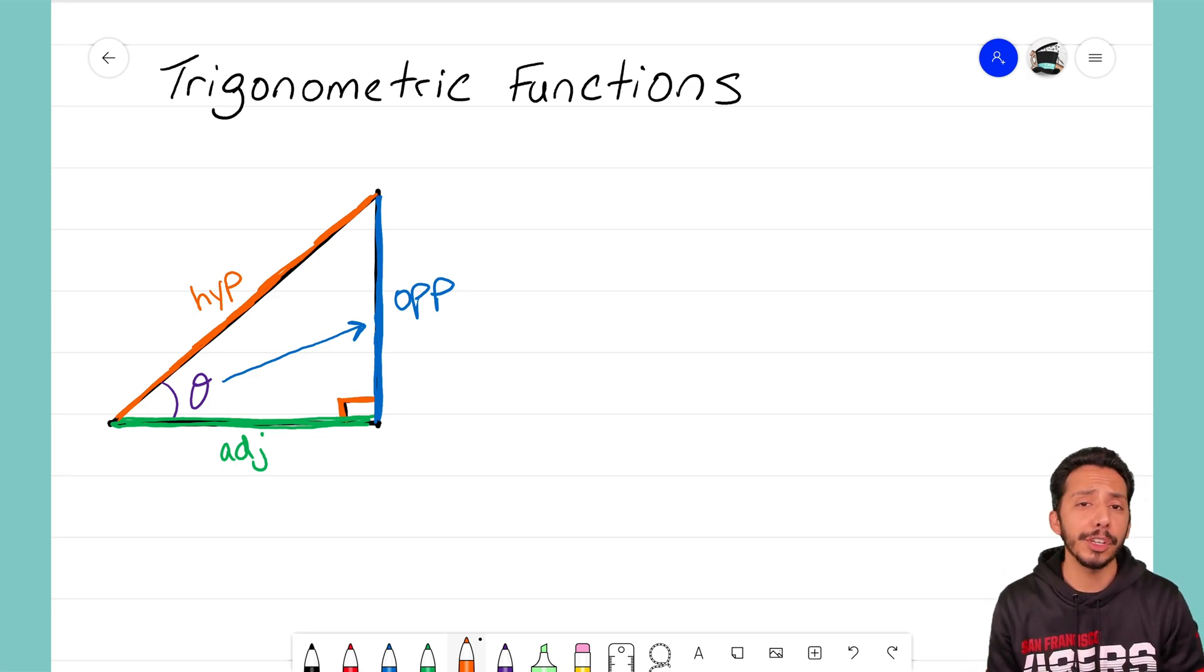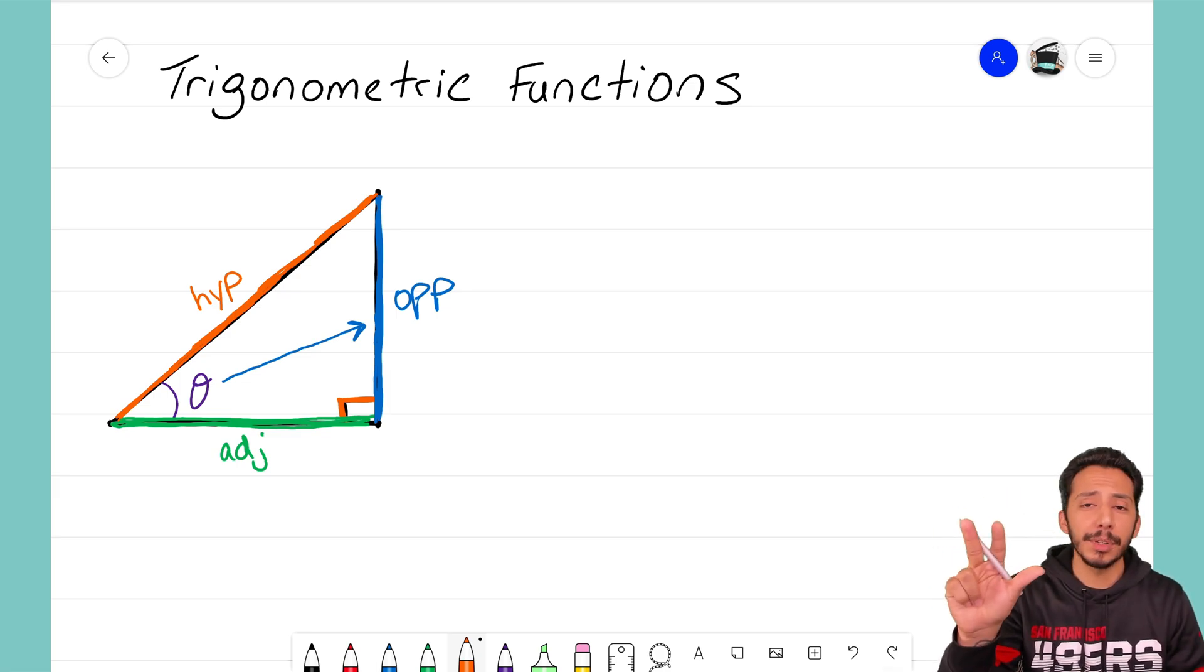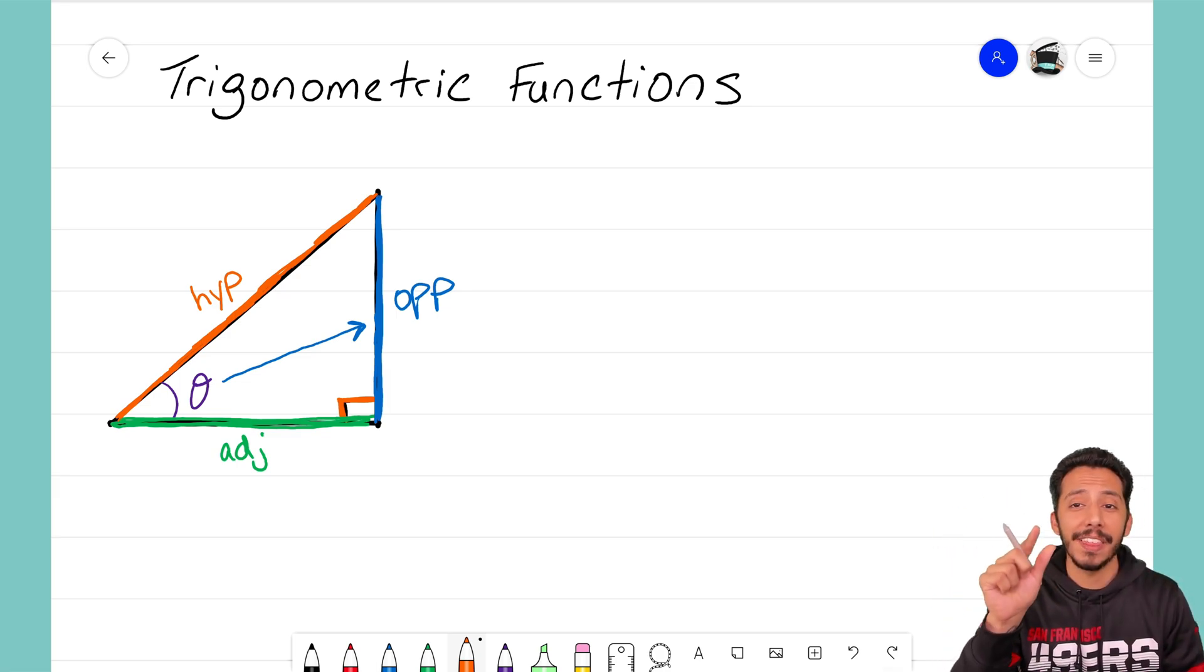So be sure whenever you're using a trigonometric function, label your triangle accordingly. Get your opposite side, write out where your hypotenuse is, label the last side adjacent. Then you'll know which function to use, and we have three to choose from.